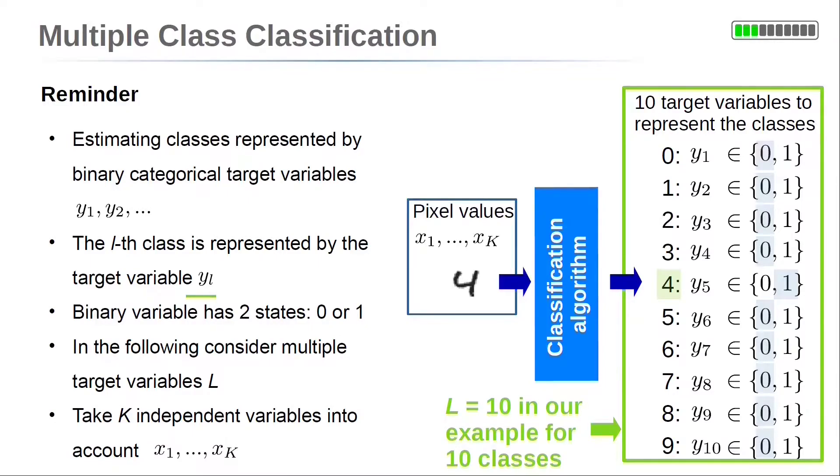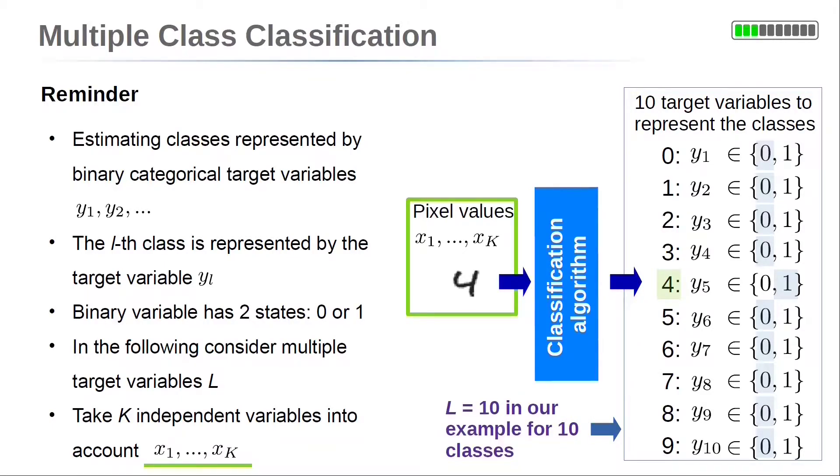In the following, we consider L different classes. So we have L target variables y. In general, we take K input features x_1, x_2 up to x_K into account.